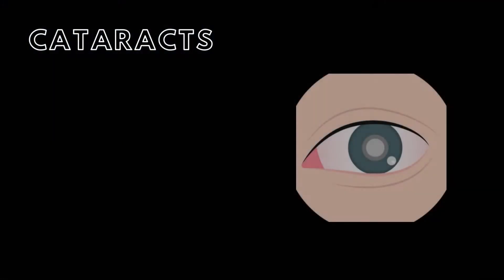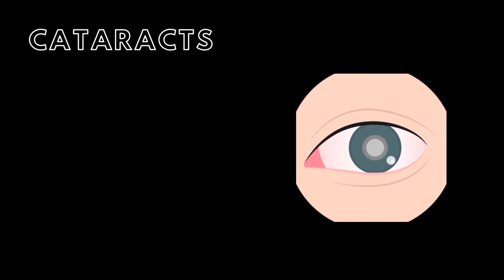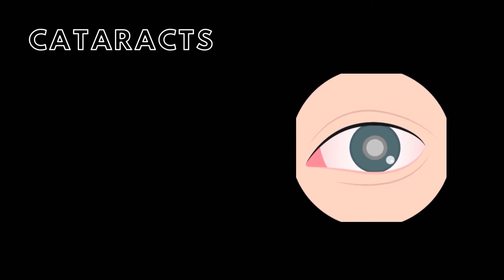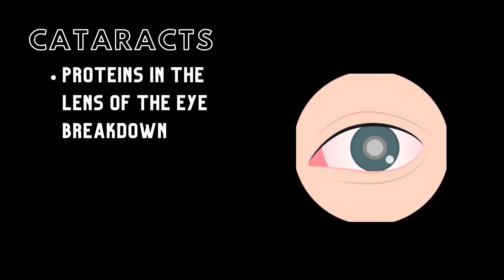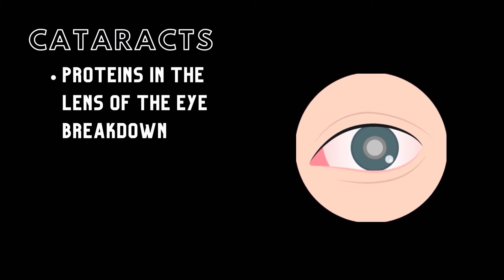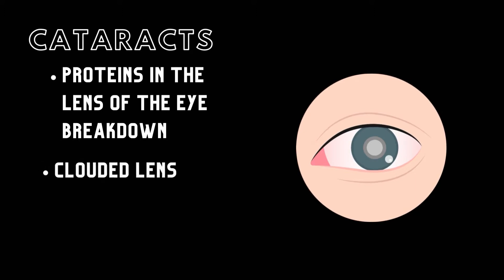A cataract is formed when the proteins within the lens of the eye begin to break down, causing the lens to become cloudy in appearance. Due to this clouding, it is more difficult for light to pass through the lens and trigger the rods and cones of the retina, resulting in vision loss.